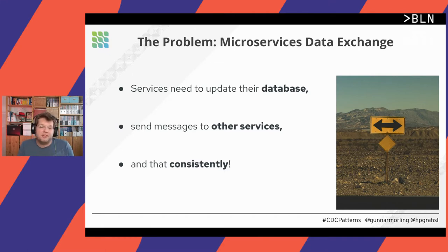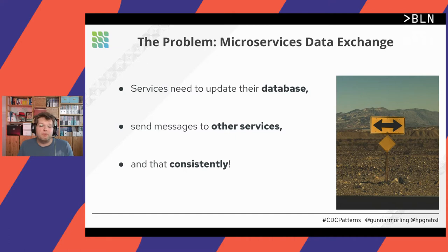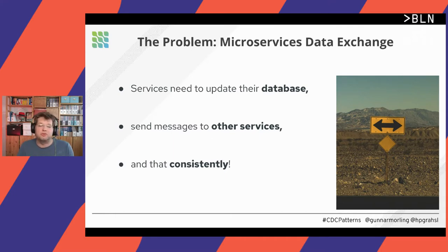Our database should be updated and we'd like to send a message to other consumers, maybe via Kafka. We want to do this consistently — we want to avoid a situation where we do the database change but fail to write the message to Kafka. That's the inconsistency we'd like to avoid.